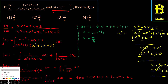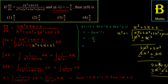अब final answer: y(0) निकालने के लिए x = 0 put करते हैं। y(0) = tan⁻¹(0 + 1) + tan⁻¹(0) = tan⁻¹(1) + 0 = π/4। यानि कि answer हो गया π/4।